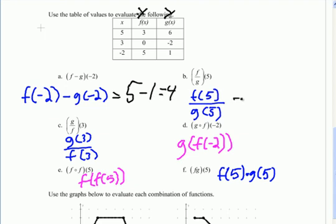Over here, we're going to do f/g(5). You can see f(5) is 3. And g(5) is 6. So we get 3/6, which is 1/2.